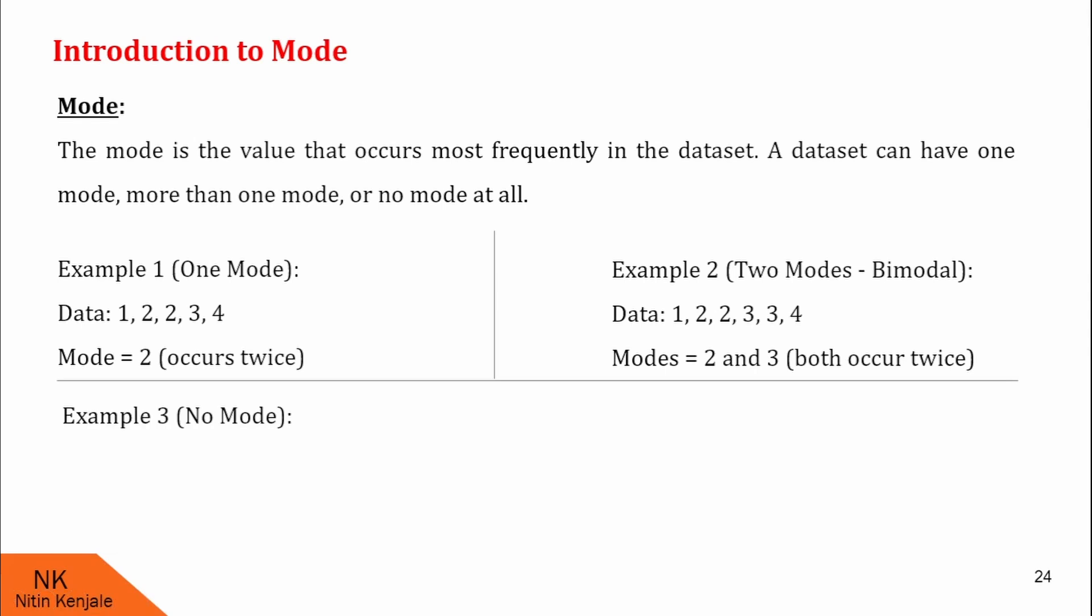Now let us see another example. In this example, you will see there is no mode. Look at the data. Data is 1, 2, 3 and 4. All the values in this data are distinct. Therefore, none of the values has more frequency, so there is no mode in this data.